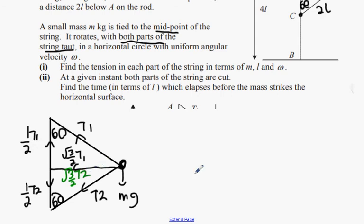Up versus down guys. So what's going up? Half T1. What's going down? T2 over, half T2. Plus mg. That's our up versus down formula.